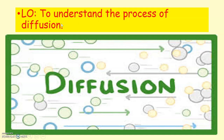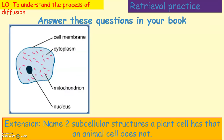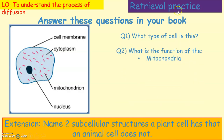Please answer the retrieval test questions in your book. First question: what type of cell is this? Second question: what is the function of the mitochondria, the nucleus, and the cell membrane? You have three minutes to complete these questions. If you finish early, please also answer the extension questions.